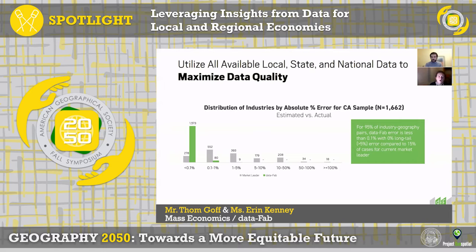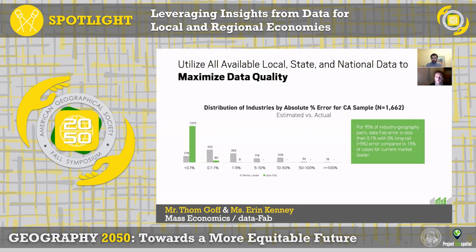By using all available data, we've really been able to maximize the quality of the data we're putting out and using in our analyses. This slide shows the distribution of industry by absolute percent error — for example, from California. We're able to really minimize our error: the vast majority of our industry geography errors are less than 0.1%. This is a significant improvement over the market leader, and our data also has a shorter tail compared to the market leader.